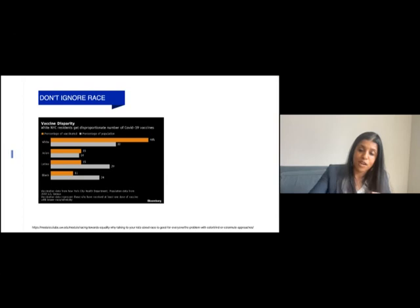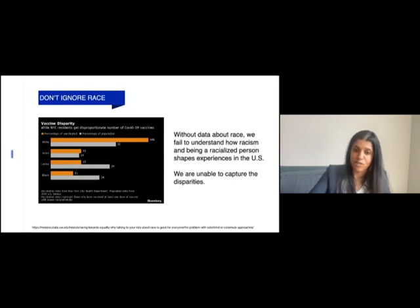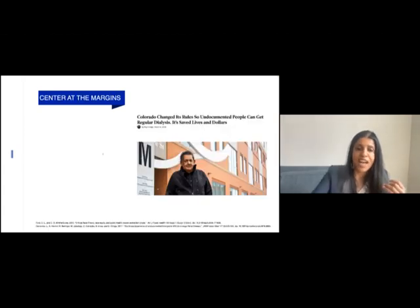One example where omission of race led to more problems was in early COVID vaccine distribution. Without data about race and ethnicity that is self-reported, we had problems allocating resources appropriately. It's important to recognize how the experience of being a person who is racialized shapes your experiences with health and access to care.